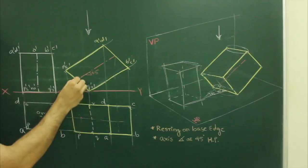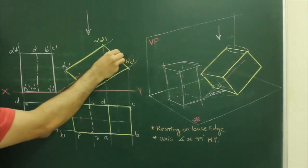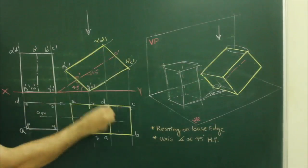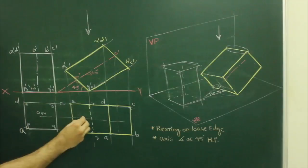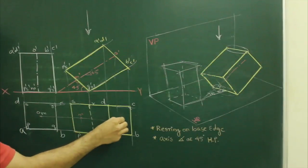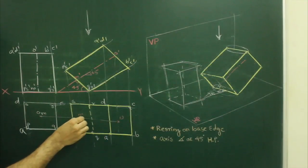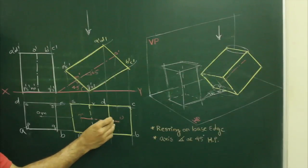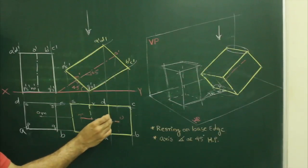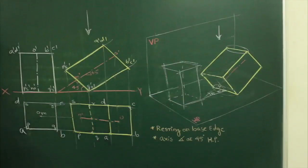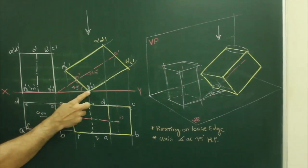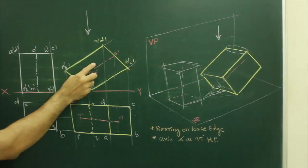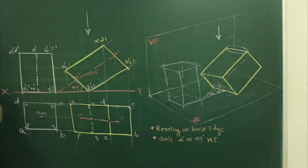Now we have drawn the axis. We project o dash, m dash, and n from here — o and n — this is the axis. So we have drawn a square prism which is resting on its base edge on HP, with the axis inclined at 45 degrees to HP.